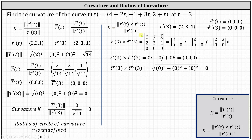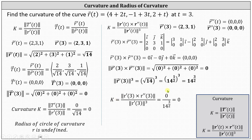For the denominator, we have the cube of the magnitude of r prime of 3, which equals the cube of the square root of 14, written as 14 to the 3-halves power. Using the second formula for curvature, the curvature equals zero divided by 14 to the 3-halves power, which once again equals zero.